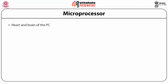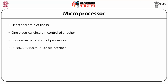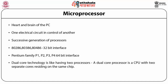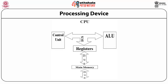The microprocessor is considered the brain and heart of the PC. Successive generations of processors include the 80286, 80386, and 80486 — all 32-bit interfaces — followed by the Pentium family P1, P2, P3, and P4 with 64-bit interfaces. Dual-core technology is like having two processors: a dual-core processor is a CPU with two separate cores on the same chip. The CPU consists of a control unit — handling instructions — and the ALU — the Arithmetic Logic Unit — with registers and main memory linked through buses.